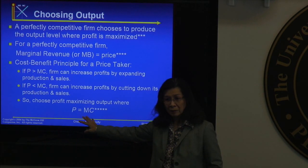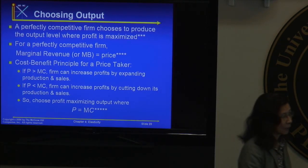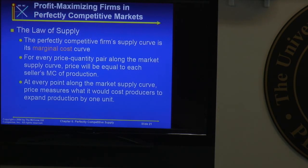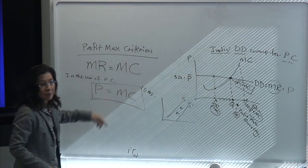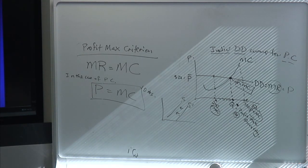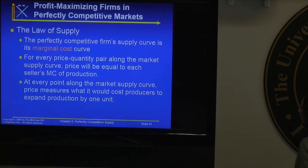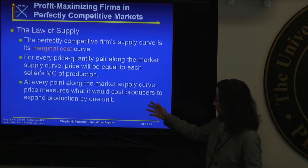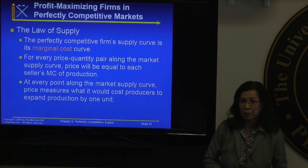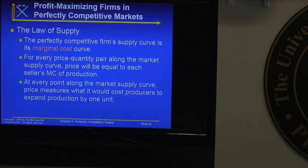You choose the profit-maximizing output where P equals MC. If you get nothing else out of today's class, be sure you get that — P equals MC. That's why I put ten stars here. This is true for all types of competition, but in perfect competition, since marginal revenue equals price, we write P equals MC. A perfectly competitive firm's supply curve is its marginal cost curve.